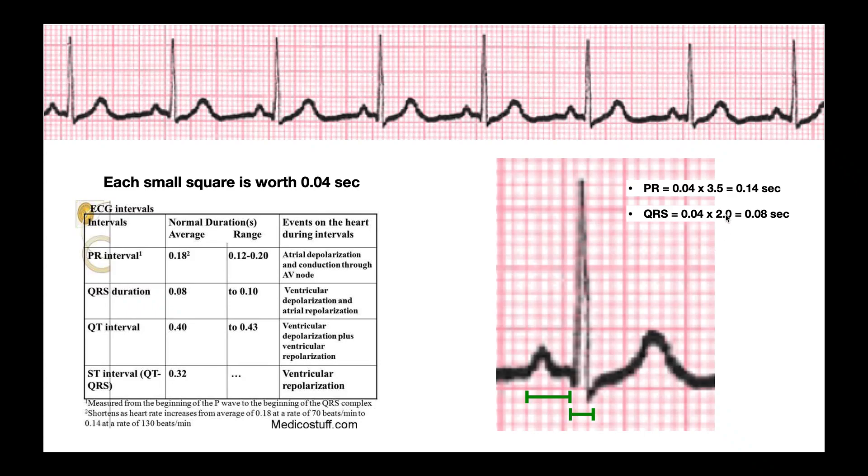And so 2.0, so two boxes times 0.04 gives us 0.08 seconds. So is this a normal QRS? Yes, it is, because 0.08 seconds is certainly less than 0.10 seconds. And in fact, the average value, which you don't really need to know that, it's just there for your information here, but it's right on the average. Okay, so this is actually a good QRS complex.